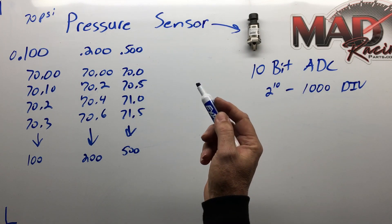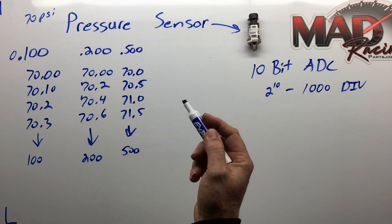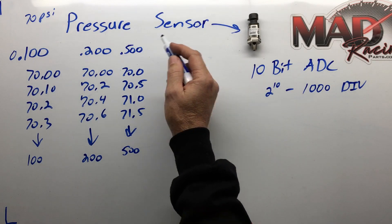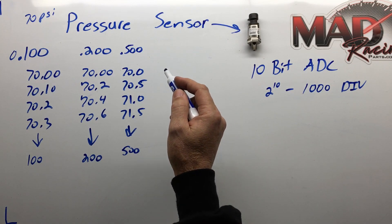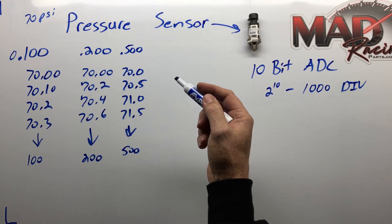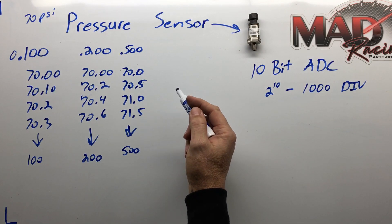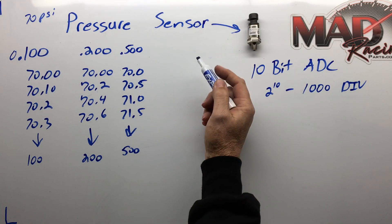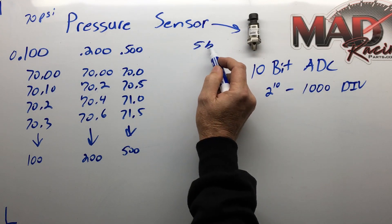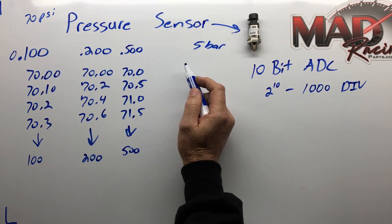The same thing goes for your MAP sensor. You have guys that want to buy a three bar MAP sensor instead of a five bar, and then later they turn the power up a little bit and now their MAP sensor doesn't go as high as the boost does. They have to turn around and buy a five bar. Get a five bar right out of the box.